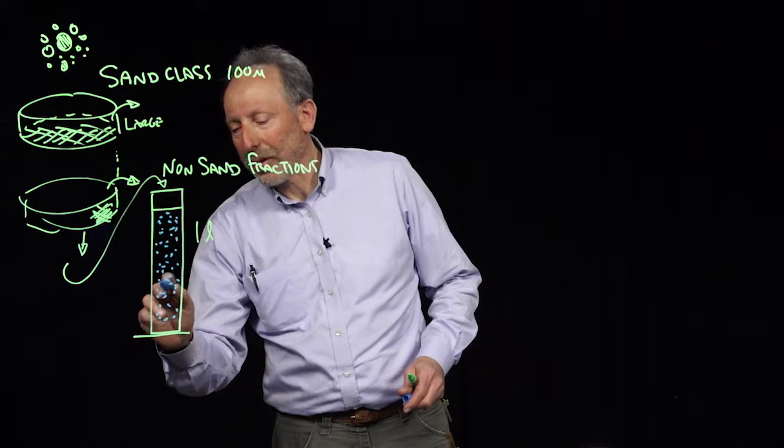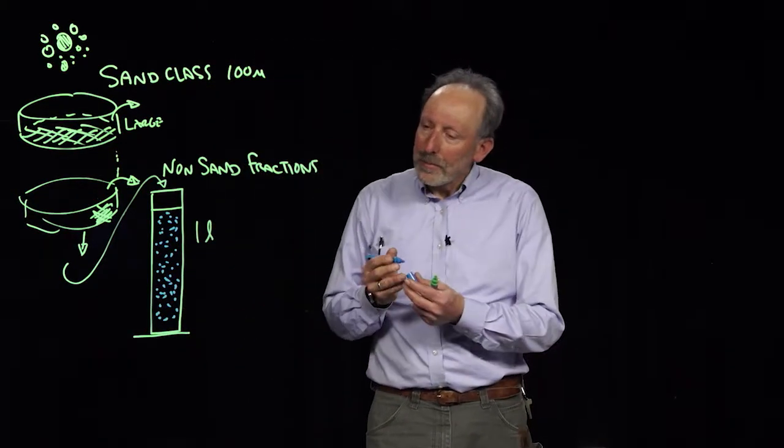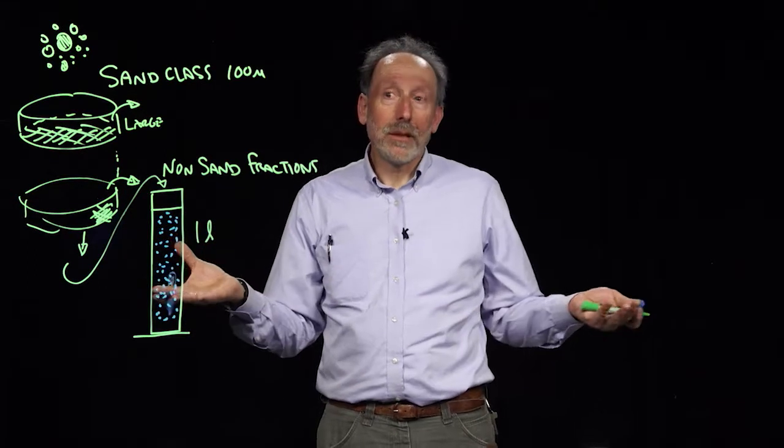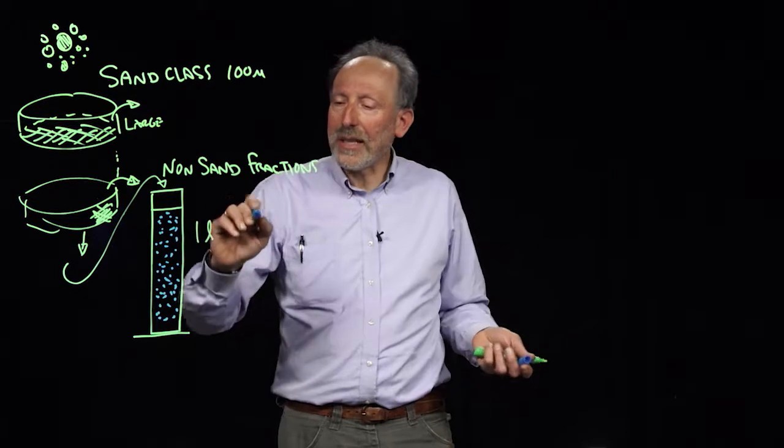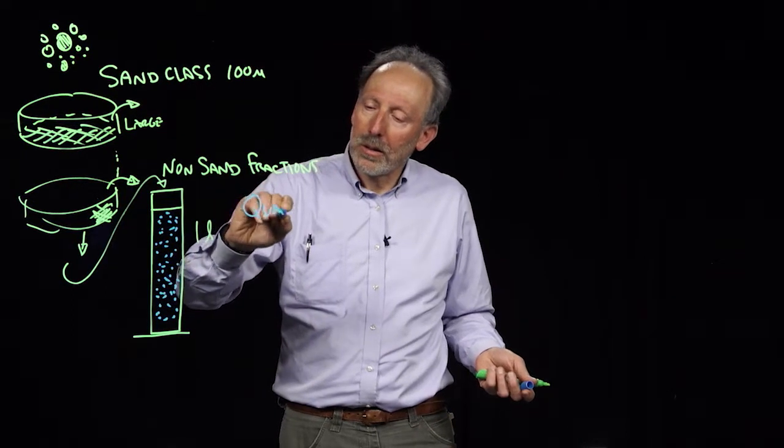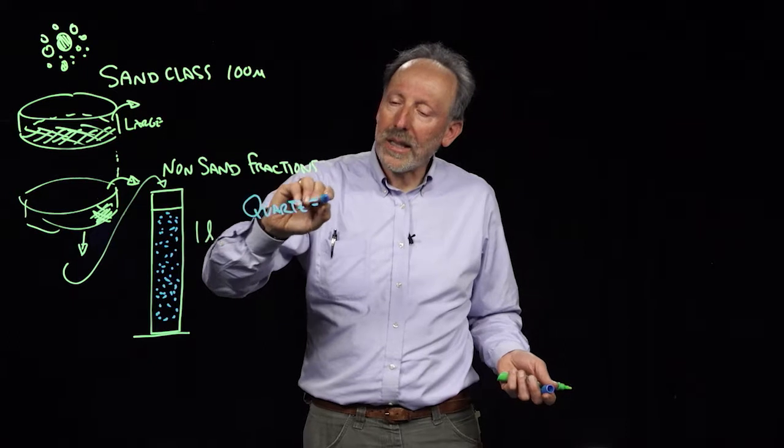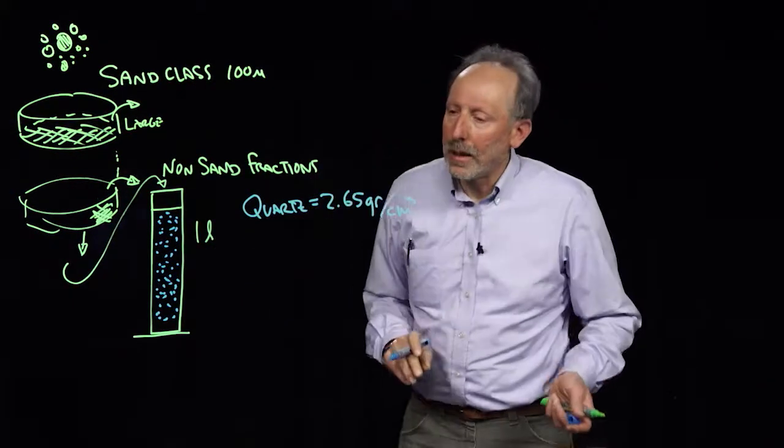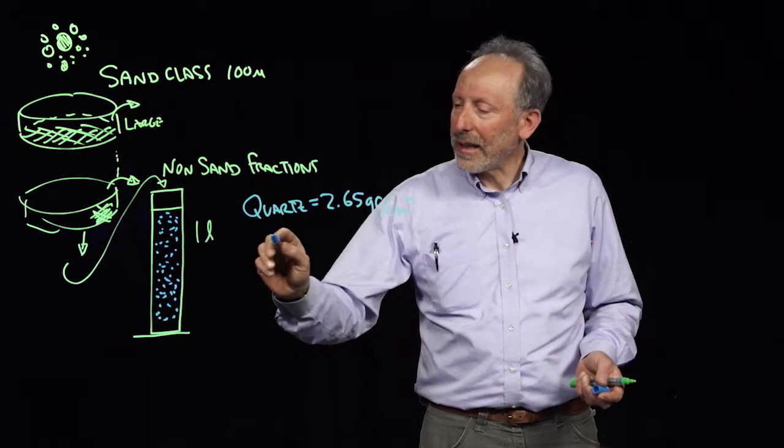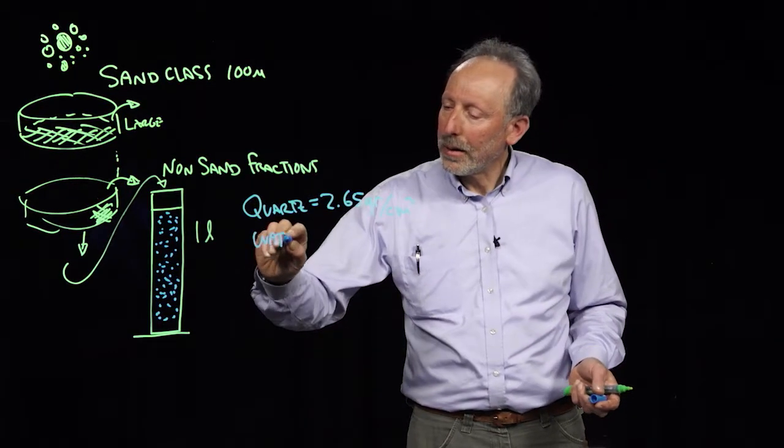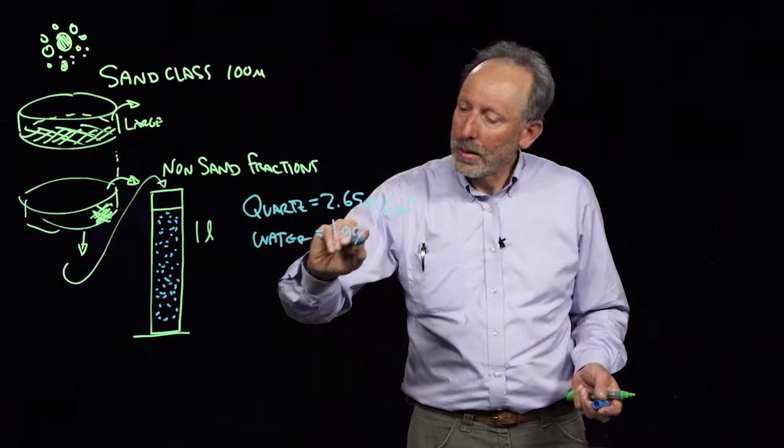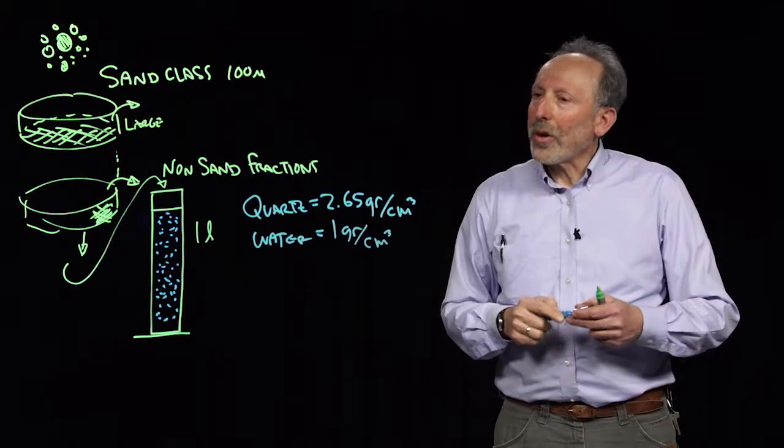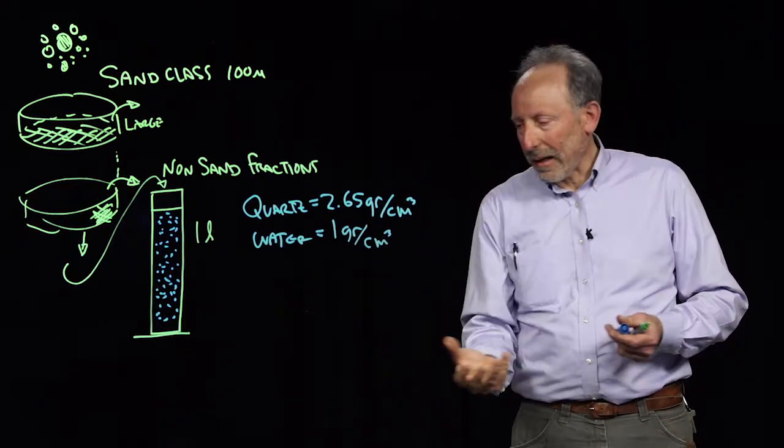And what happens to particles that are suspended in water? They want to settle. So what is the typical density of a mineral? Well, minerals have densities. For instance, quartz will have a density of 2.65 grams per centimeter cubed. On the other hand, water will have a density of 1. So we can see then that the quartz is denser than water, therefore it will settle down through the water column.